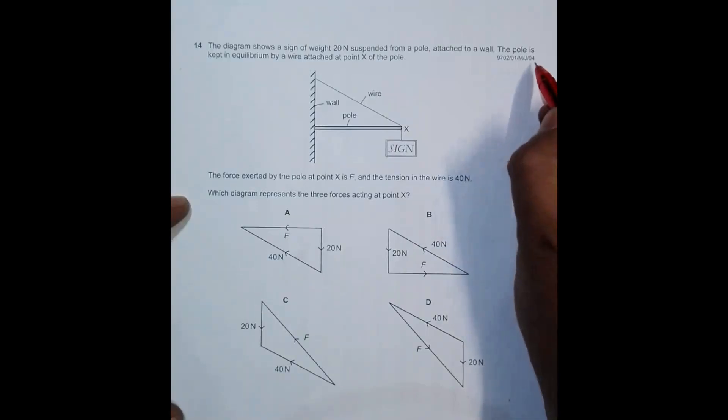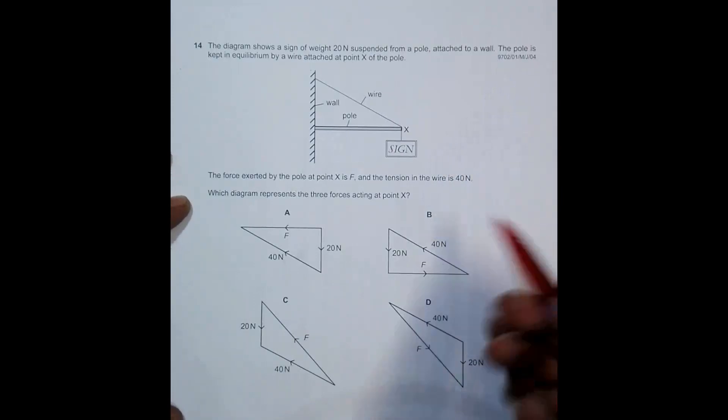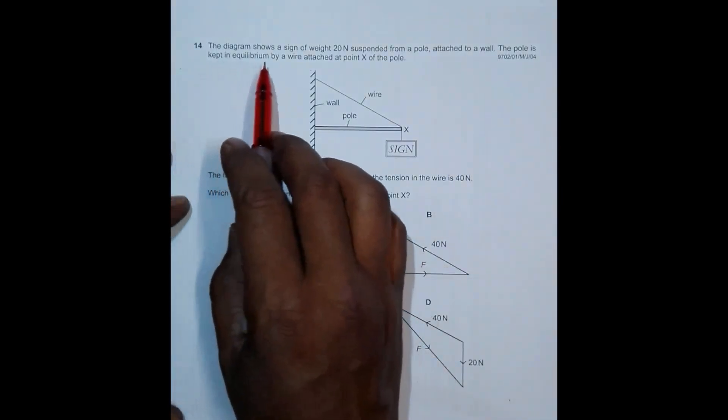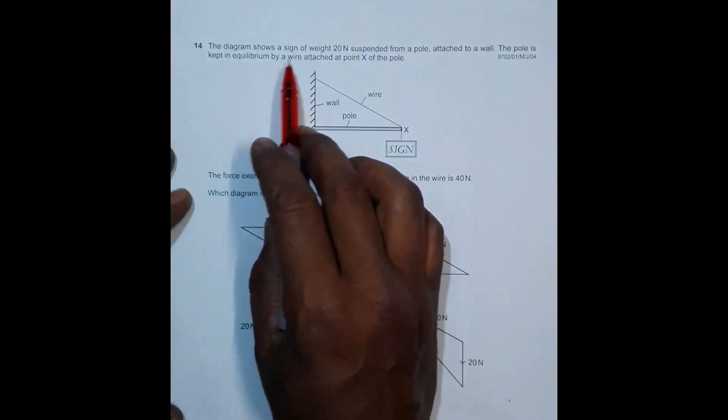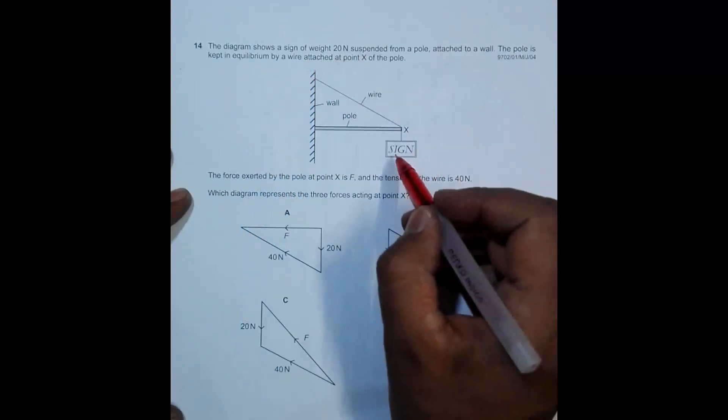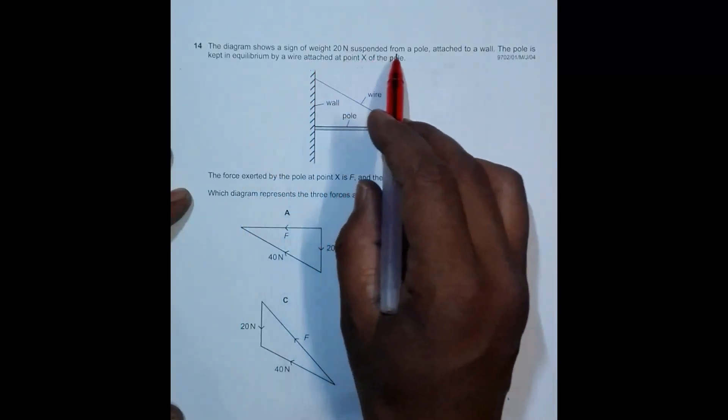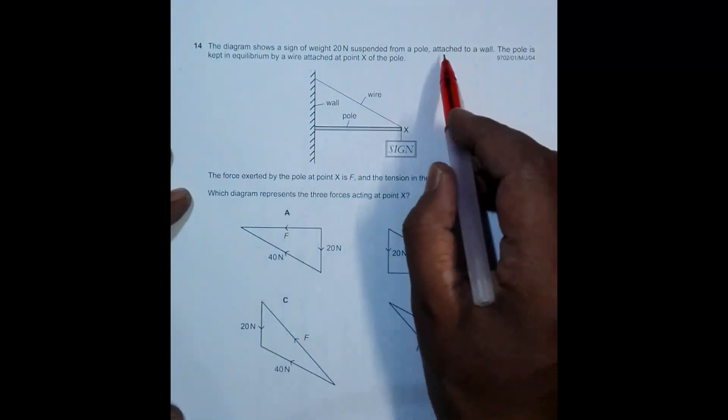Hello folks, this is 2004 May June paper 1, question number 14. The diagram shows a sign of weight 20 Newtons suspended from a pole attached to a wall.